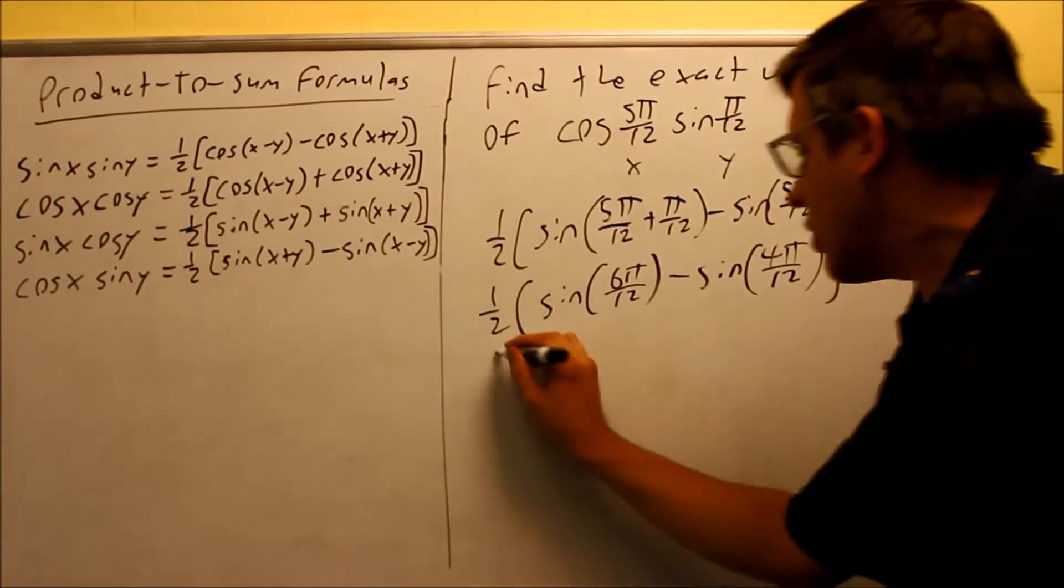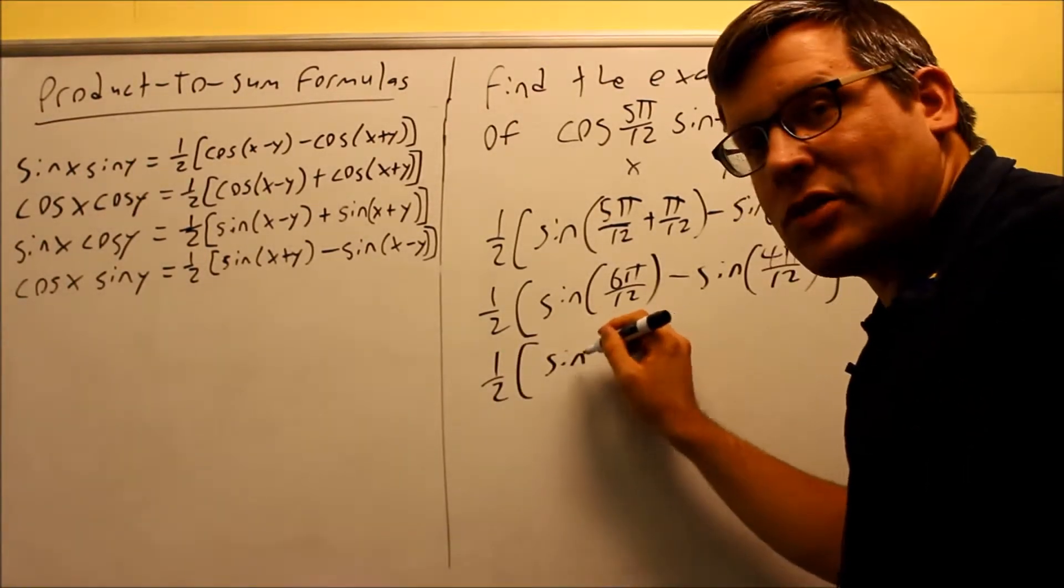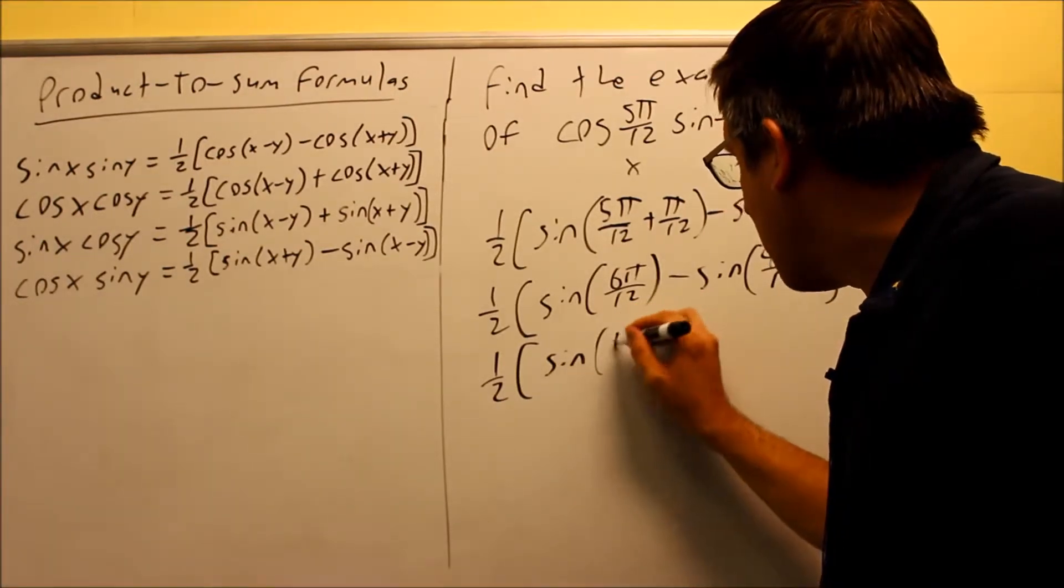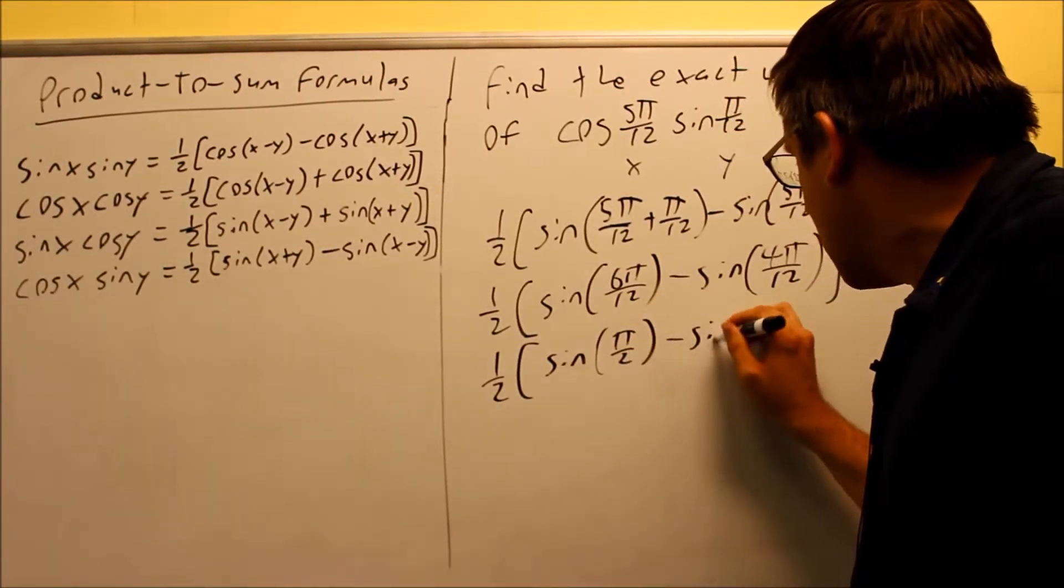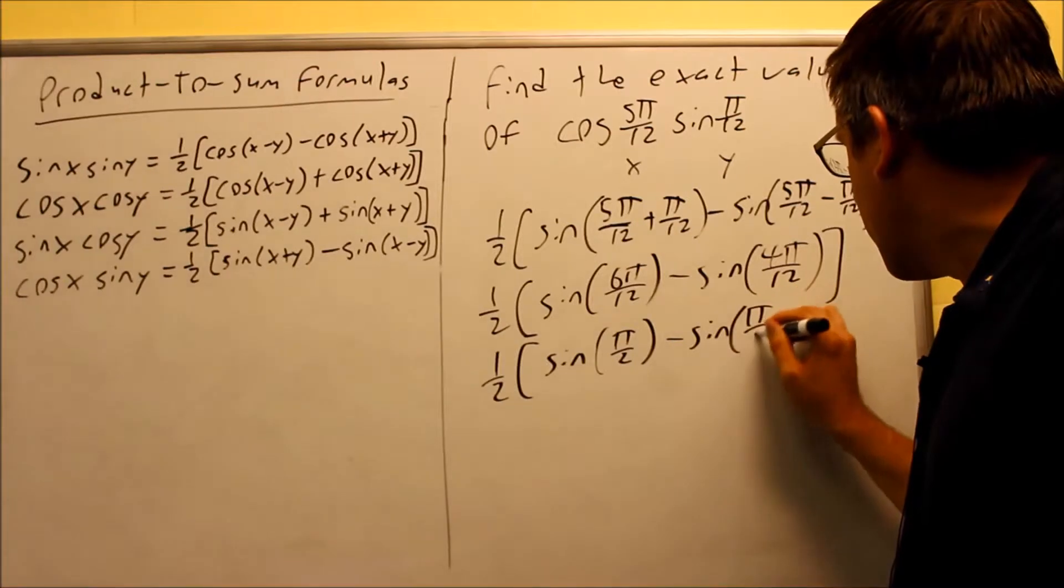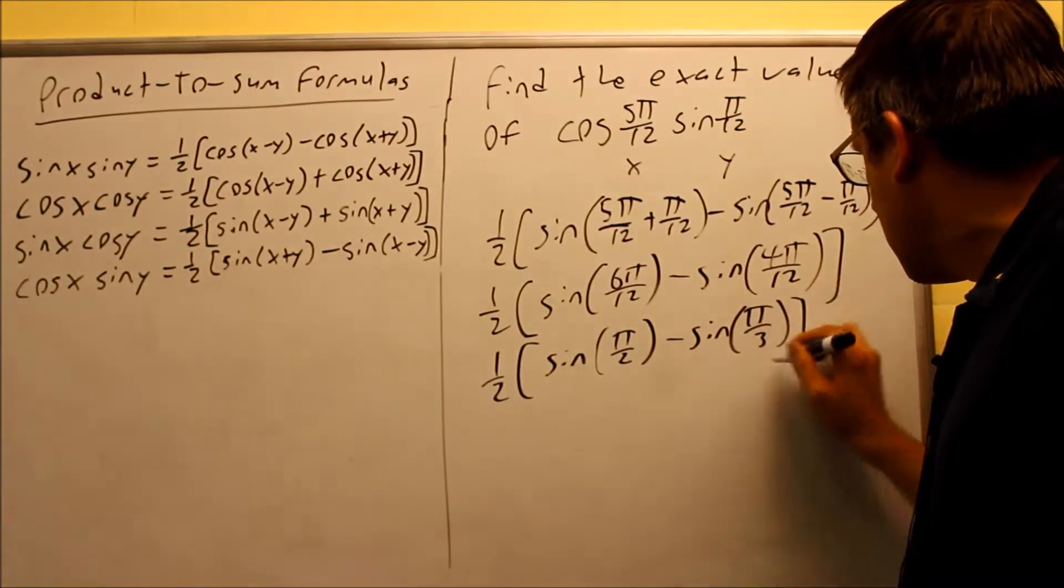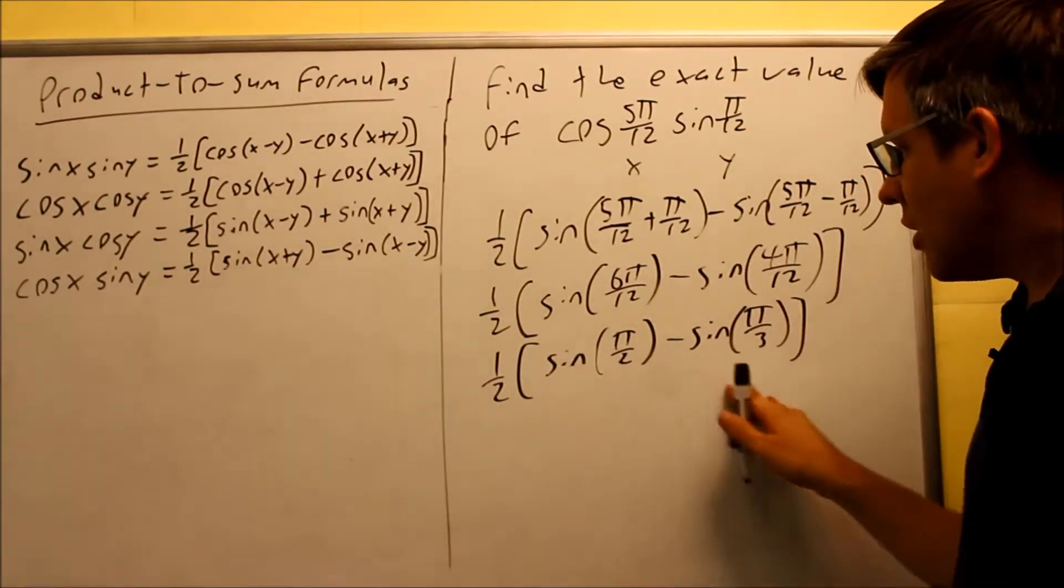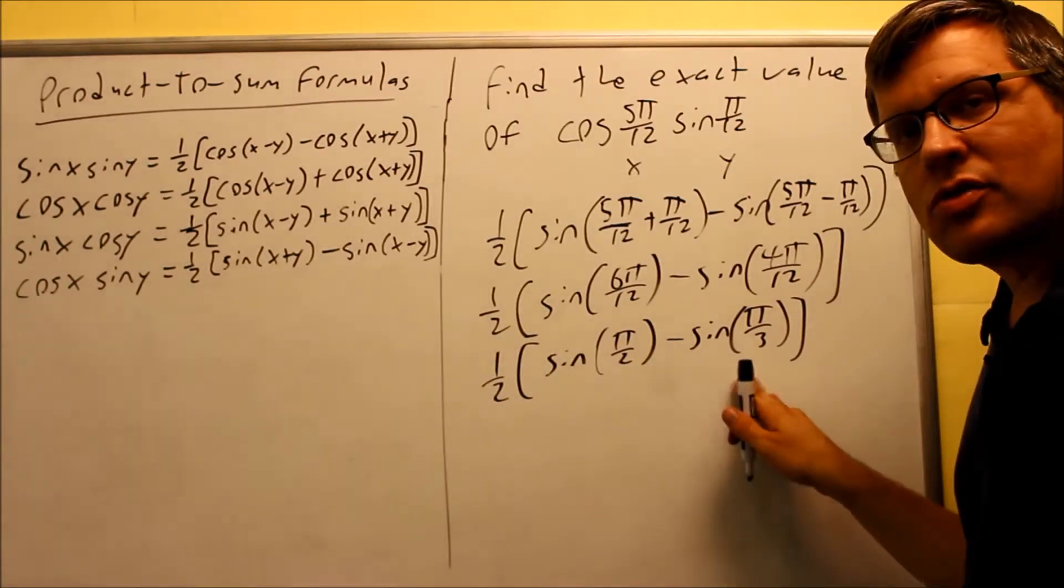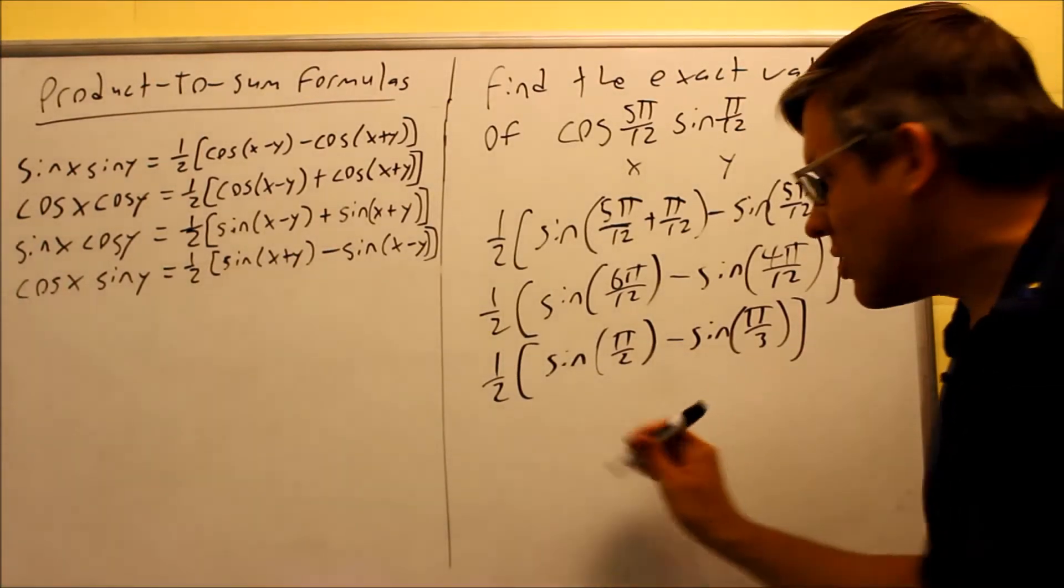Now we're going to reduce it, and then I can get values off my table. That's going to be sine of π/2, and then this is sine of π/3. Now I can get values from my table or unit circle for each of these.